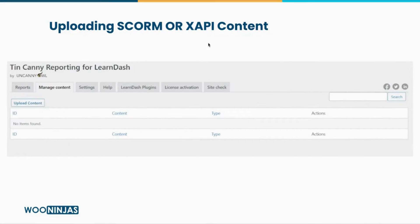Next, you will be able to go to the Manage Content tab right within the settings, and right there you will see a button that allows you to directly upload content created on any of the authoring tools we've mentioned, or any SCORM or Experience API content. Once uploaded, you can assign the content to a specific LearnDash course by selecting it from the drop-down list you'll see on your screen.